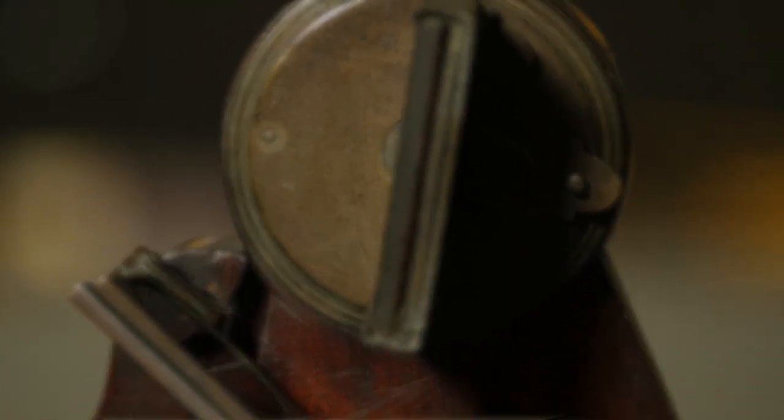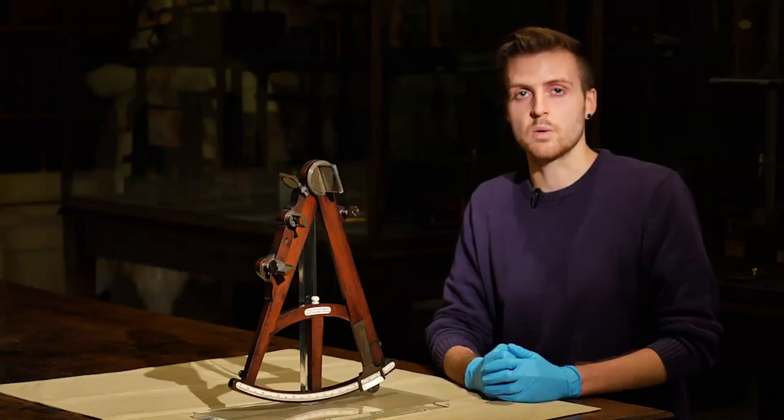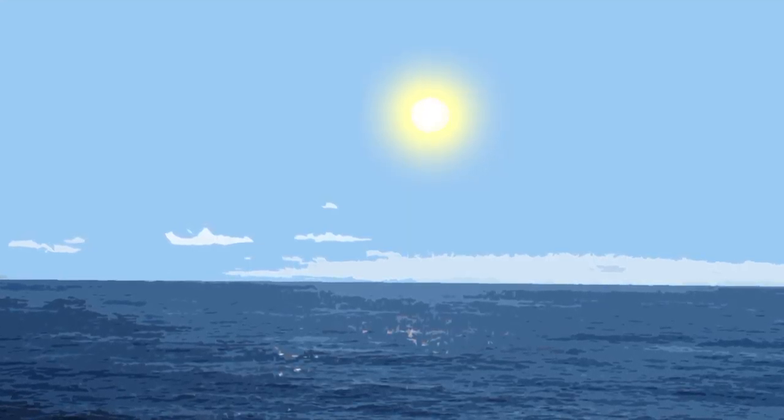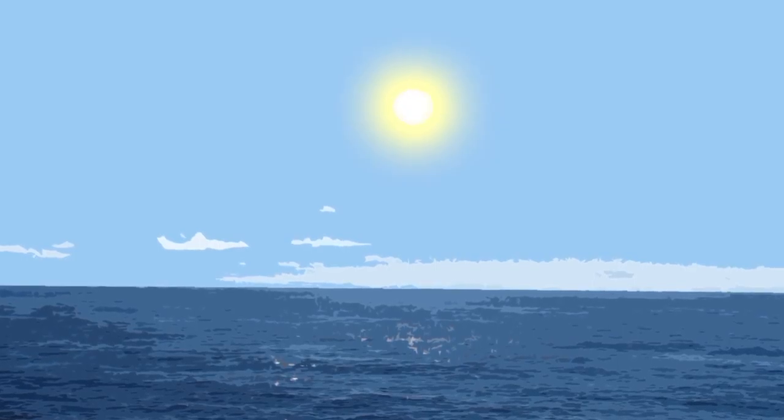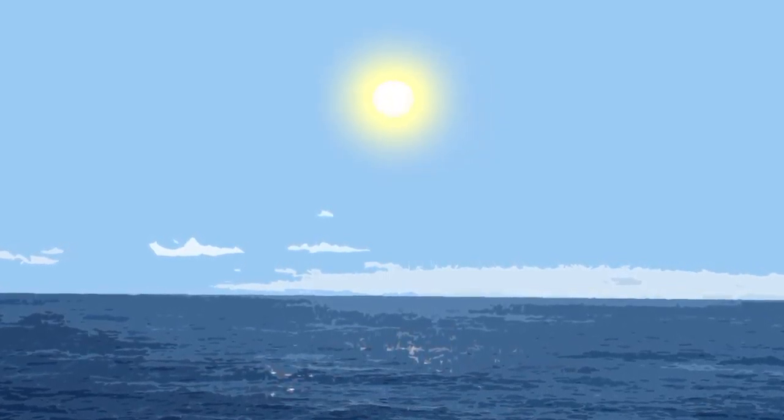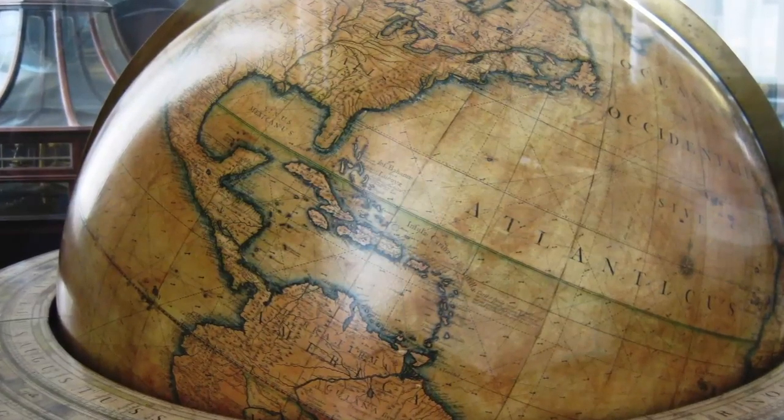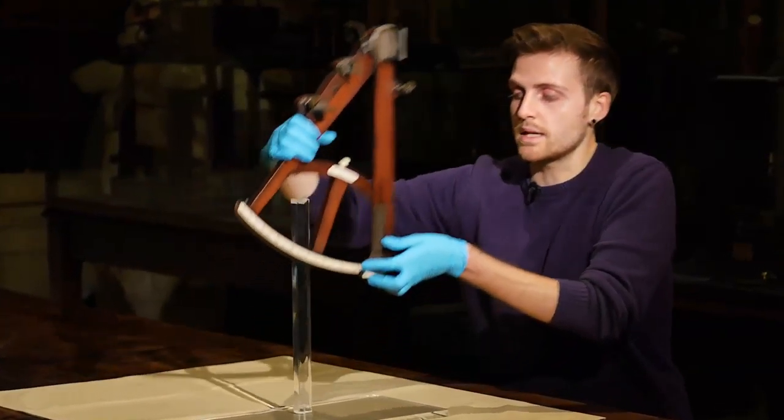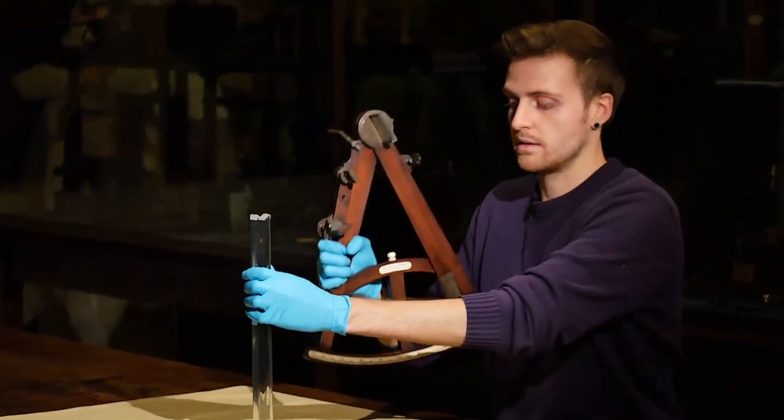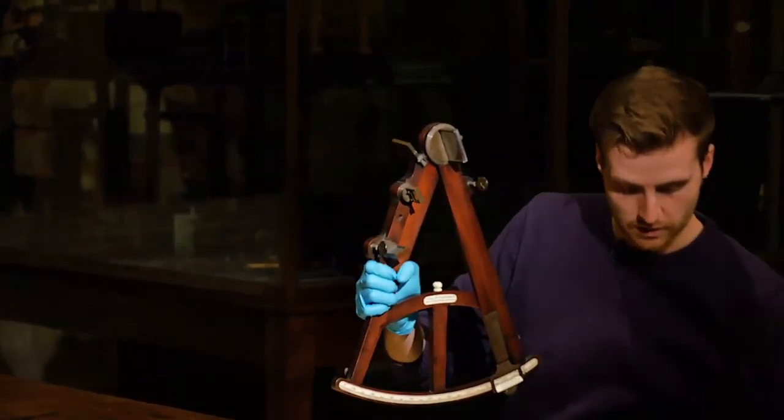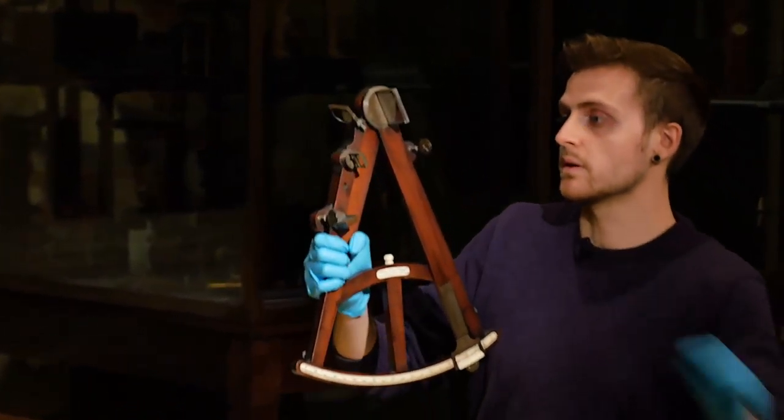As you move away from the equator, the sun appears to be lower in the sky. The octant would be used to measure the altitude or height of the sun over the horizon, and this information could be used to calculate latitude. At midday when the sun is at its peak, the navigator would hold the octant so that the horizon could be seen through this window.